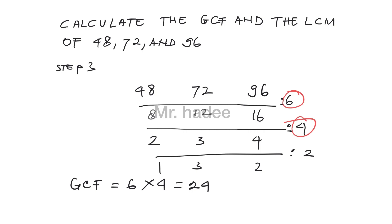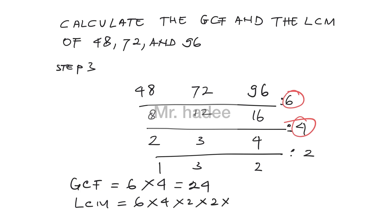The LCM of those three numbers is the multiplication of all numbers at the outer part: 6, 4, 2, 2, 3, and 1. So LCM equals 6 times 4 times 2 times 2 times 3 times 1.